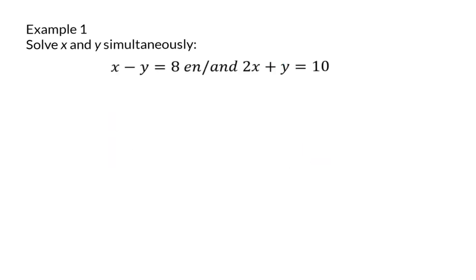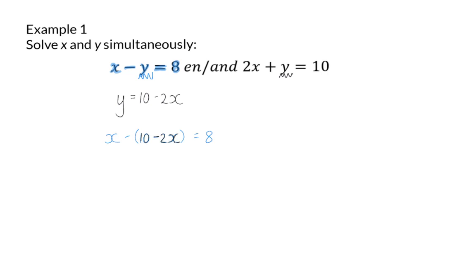Next, I'm going to solve the same two equations, but this time by getting y alone in the second equation. Because, as I've mentioned, you can get any variable alone in any of the equations to solve using substitution. So in that second equation, if I get y alone, I will have 10 minus 2x. This I will now substitute into my first equation, because I know that y has the same value as 10 minus 2x. So now I take my first equation, and instead of y, I write a bracket. Inside that bracket, I now do my substitution, and y is 10 minus 2x.